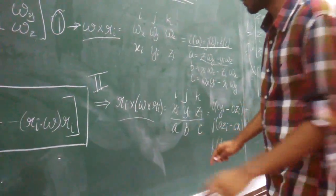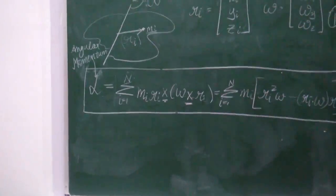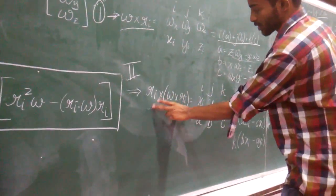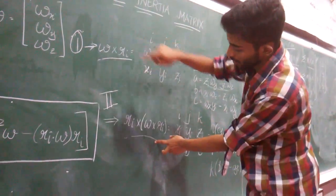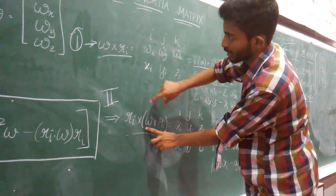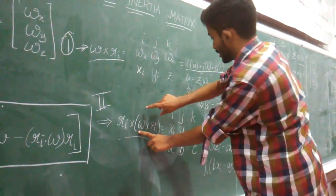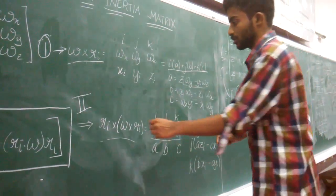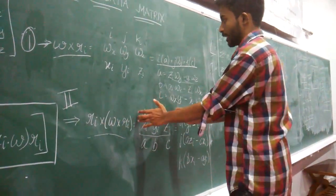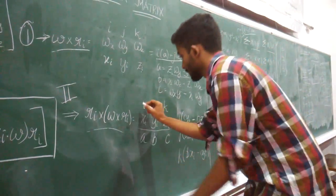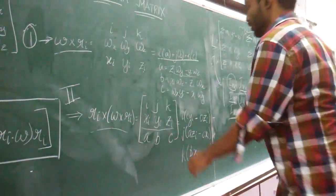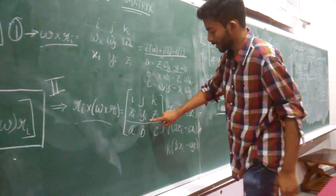Now let us evaluate r_a × (ω × r_a). Using the result for ω × r_a from above, we write this whole expression as a matrix determinant with rows (i, j, k), (x_i, y_i, z_i), and (a, b, c).